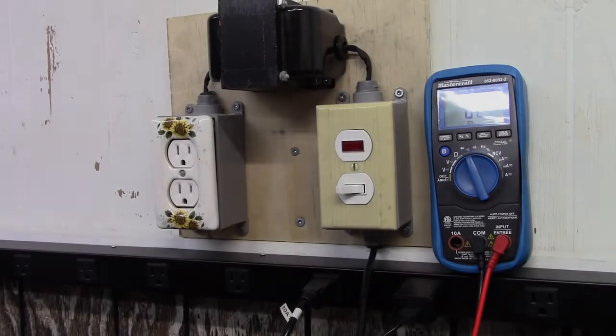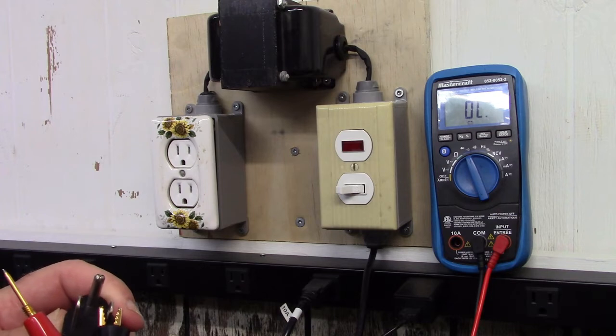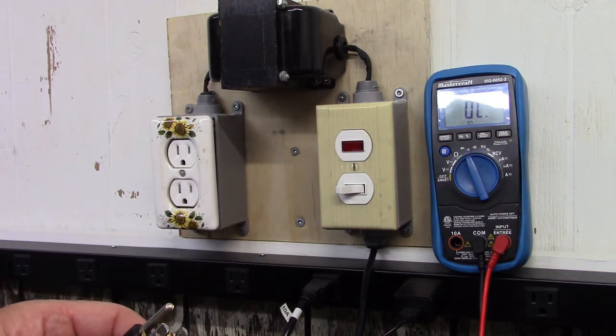You take your multimeter, make sure it's on continuity mode, click it to any side of the plug, and make sure you've got contact on both sides of the plug.